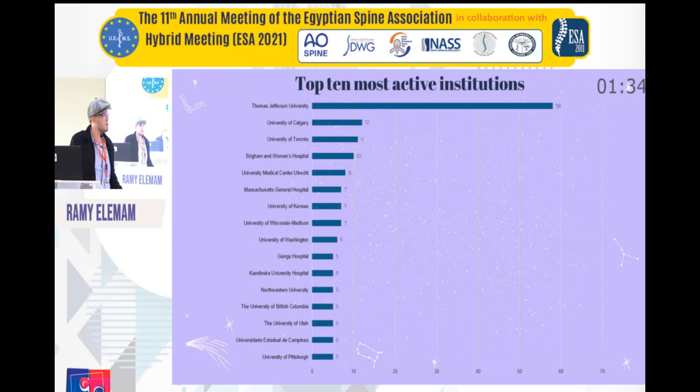This is the top 10 most active institutes. Thomas Jefferson University came in first place with 58 publications, followed by the University of Calgary with 12 and the University of Toronto with 11.